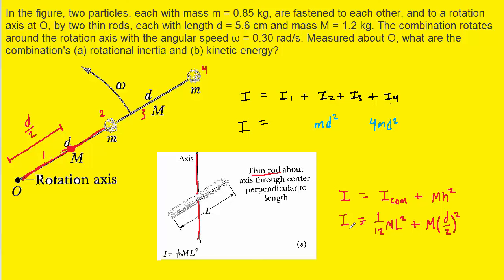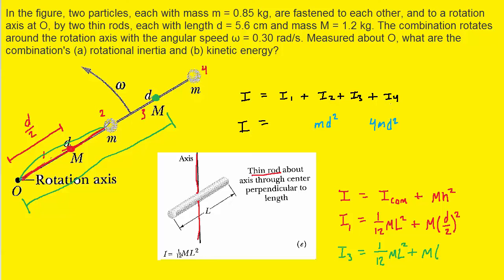Now let's look at the rotational inertia for the rod marked as Object 3. Again, we use the parallel axis theorem: the rotational inertia about the center of mass plus mass times h squared. Here, h is the distance from the center of mass of this rod all the way to the rotation axis, which equals 1d plus half a d, that is 1 and a half d, or 3/2 d.